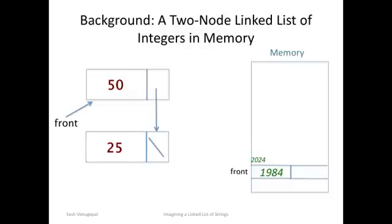Starting at address 1984 the integer 50 occupies the first four bytes then starting at address 1988 is the address of the 25 node which is 2000.